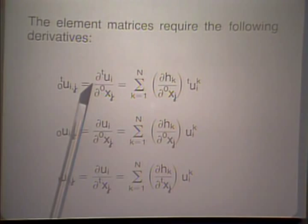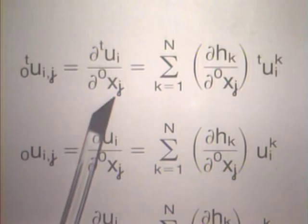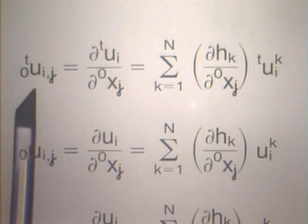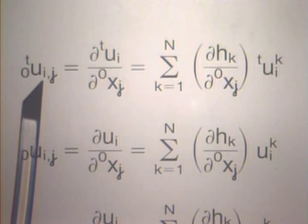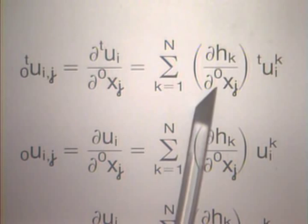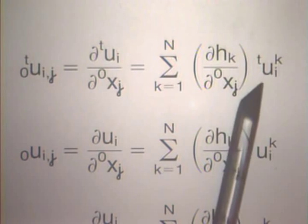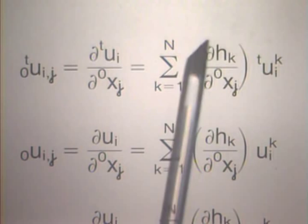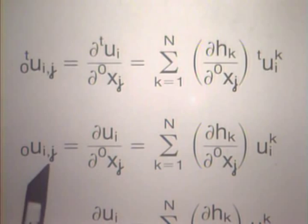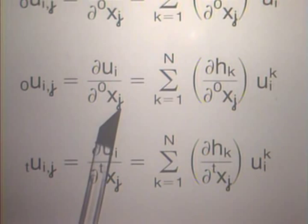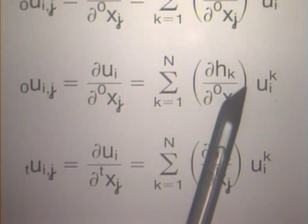The element matrices require derivatives, obtained much the same way as in linear analysis. We need the derivative of Tui with respect to the original coordinates, which is obtained by differentiating the hk functions with respect to the original coordinates. Similarly, for incremental displacements, we differentiate with respect to the original coordinates. We also need the derivative of Ui with respect to the current coordinates, obtained by differentiating hk with respect to the current coordinates.